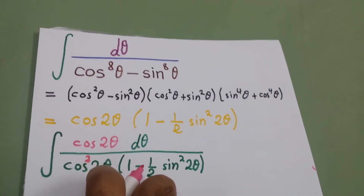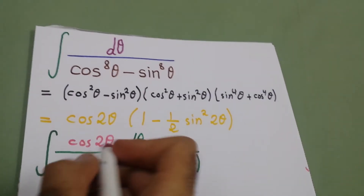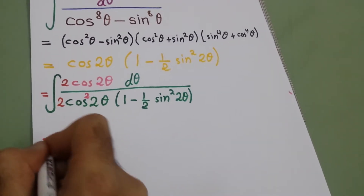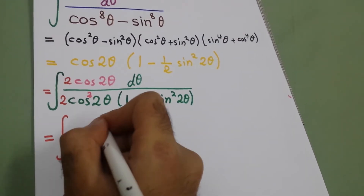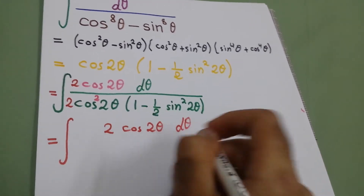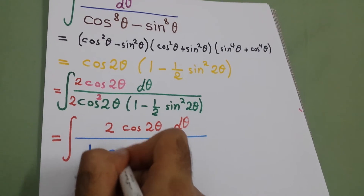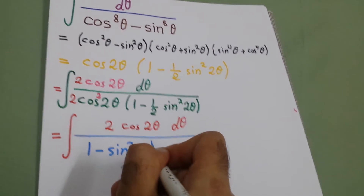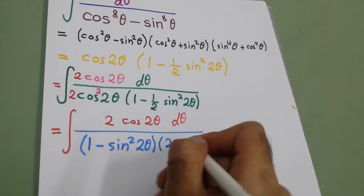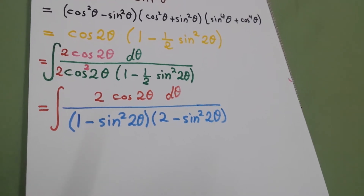We will convert this to sine, giving 1 minus sine 2θ times 1 minus sine squared 2θ. We will also multiply by 2. So the integral becomes the integral of 2 cosine 2θ dθ over the expression, which we can write as 1 minus sine squared 2θ, and multiplying through by 2 gives 2 minus sine squared 2θ.